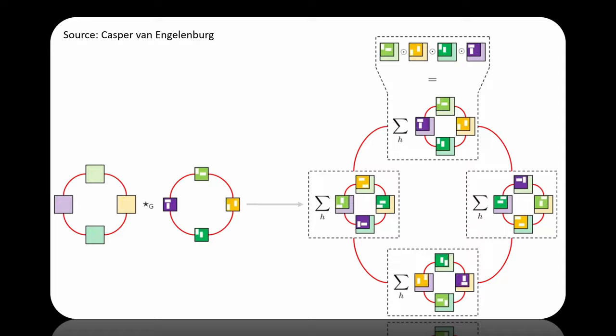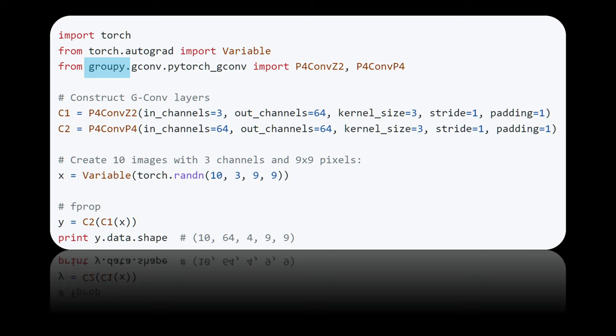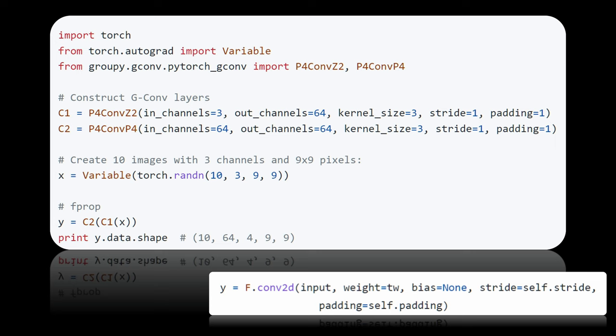If you want to try out group convolutions in practice, there is a python library by Taco Cohen called GroupPy. It also includes a PyTorch implementation and here's an example of how the group convolution layers can be set up. So you just have group specific convolution classes that can be used like every other convolution module. As far as I understood it, the implementation simply uses the classical conv2D module of PyTorch and applies it to all of the group elements.